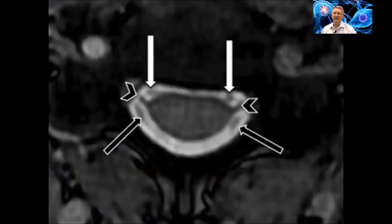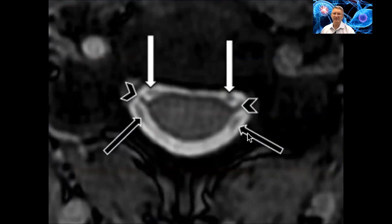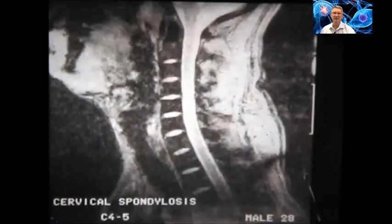In this MRI, we can see at the long arrows the dentate ligaments, very nicely illustrated. Here we have the spinal cord and the cerebrospinal fluid, which appears bright on this T2-weighted sequence.